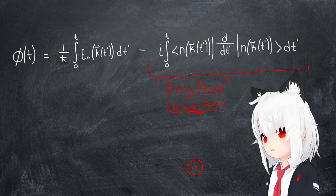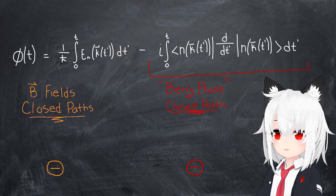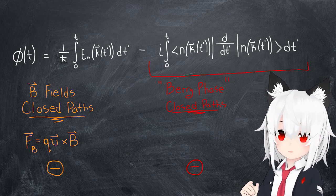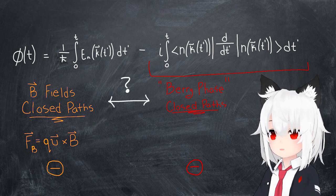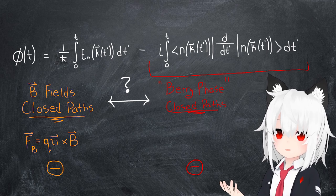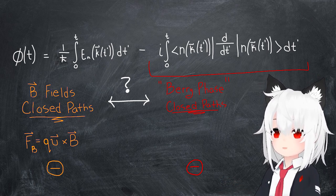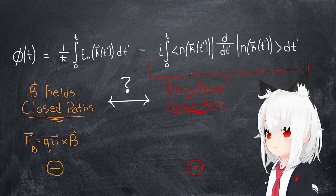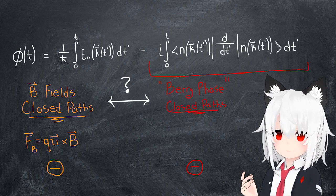And this is pretty interesting, because magnetic fields are also associated with closed paths, being that the Lorentz force is a centripetal force which pushes electrons into circular trajectories. So already there seems to be some sort of vague analogy between this Berry phase term and magnetic fields, at least in the weak sense of them both being associated with closed paths. And this intuition is the first hint that this Berry phase term might have something to do with the anomalous Hall effect.